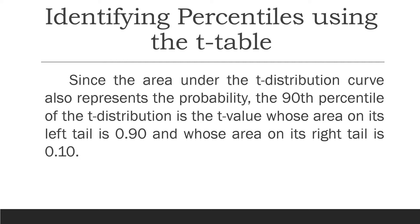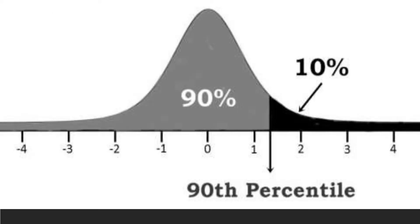To illustrate further: the 90th percentile means that at this point, 90% of the area is located to the left and 10% of the area is located to the right of this t-value.